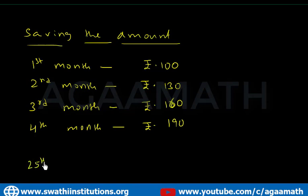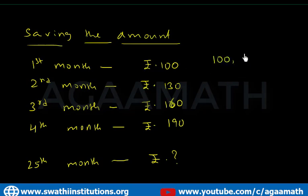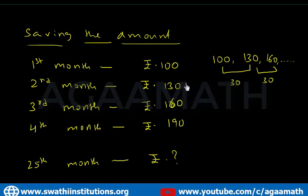What would my savings be in the 25th month? To find that, we need to learn about progressions. If we list the numbers — 100, 130, 160 — the difference between any two consecutive numbers is 30, which is constant. This type of sequence, where the difference between any two consecutive numbers is always a fixed value, is called Arithmetic Progression.